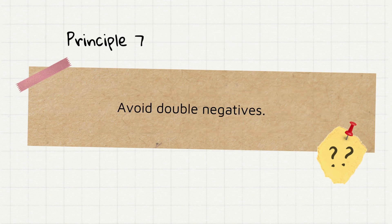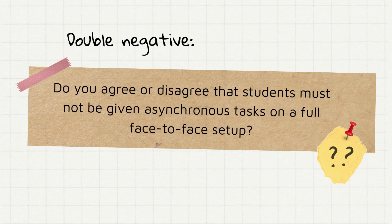Principle 7, avoid double negatives. Double negative is a sentence construction that includes two negatives. Here is an example.